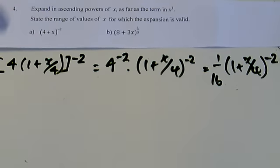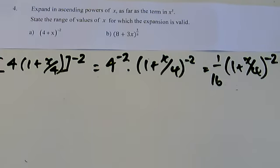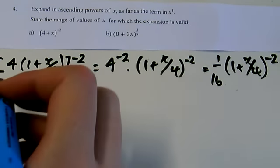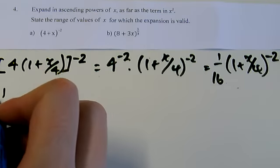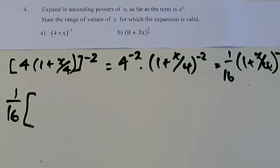So that's used by new expansion. I'm just going to leave that 1 sixteenth outside of the brackets. I'm going to worry about that later. So let's pop some big brackets in. Okay, so in this case n was minus 2, x was x over 4,